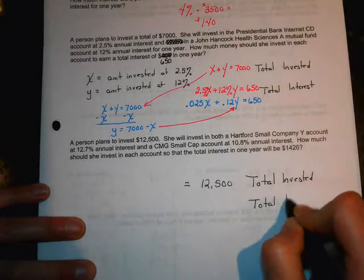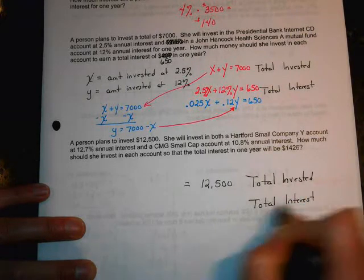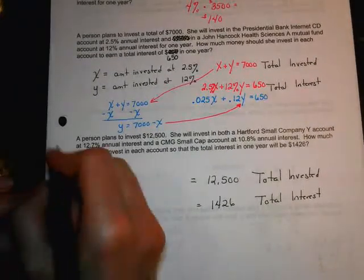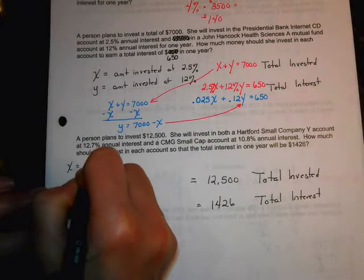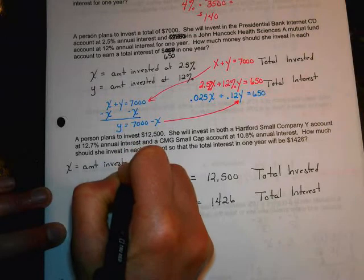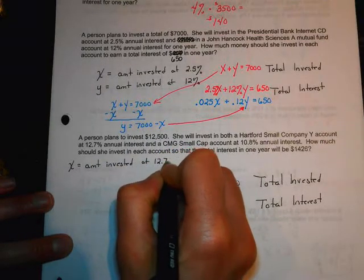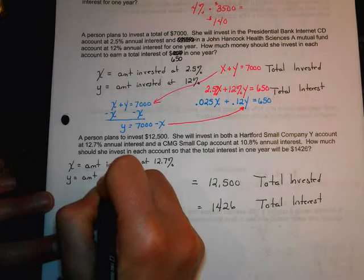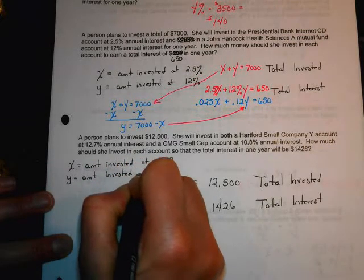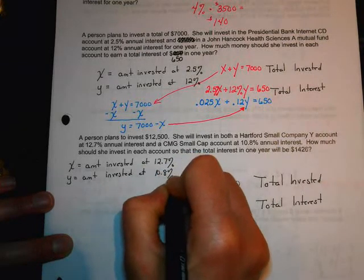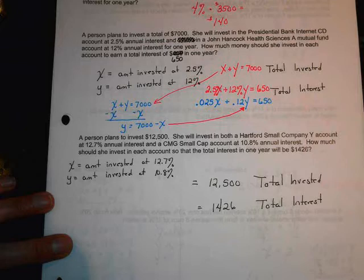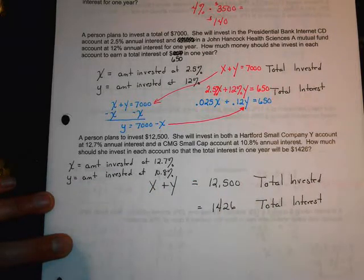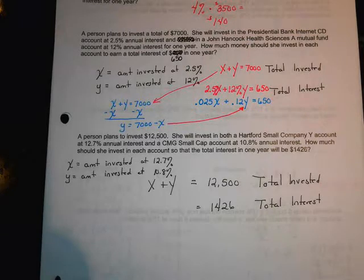Just like before, you have your total invested. So, I know this is going to equal $12,500. And then, we've got our total interest. And the total interest we're going to make is $1,426. So, let's set our two unknowns.